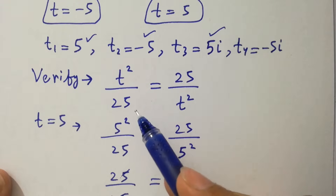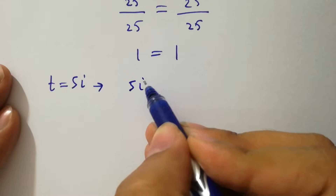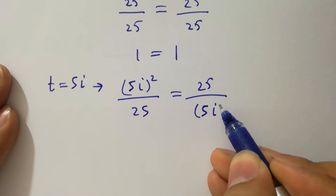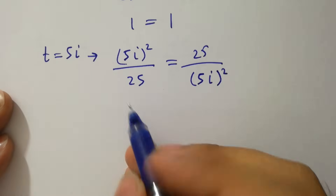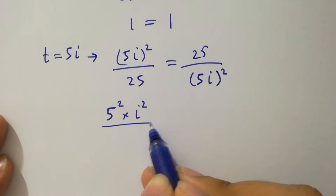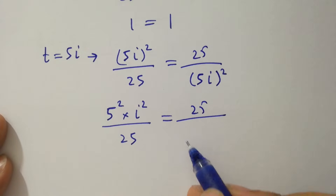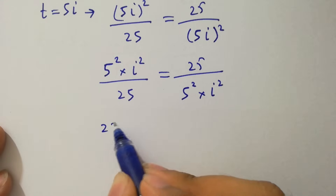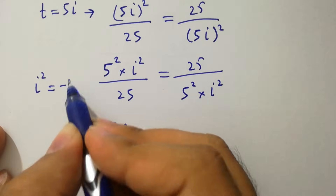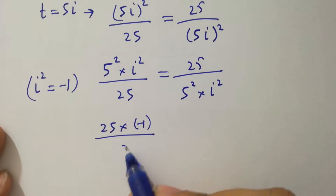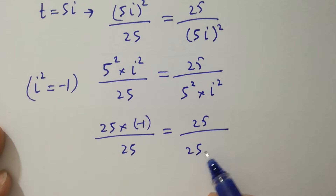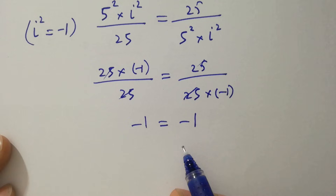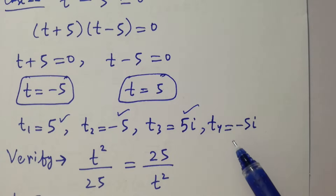Put t equals 5i into t² over 25. We have (5i)² over 25 equals 25 over (5i)². Next we have 5² times i² over 25 equals 25 over 5² times i². Since i² equals −1, we get −25 over 25 equals 25 over −25, that is −1 equals −1. Left hand side equals right hand side.